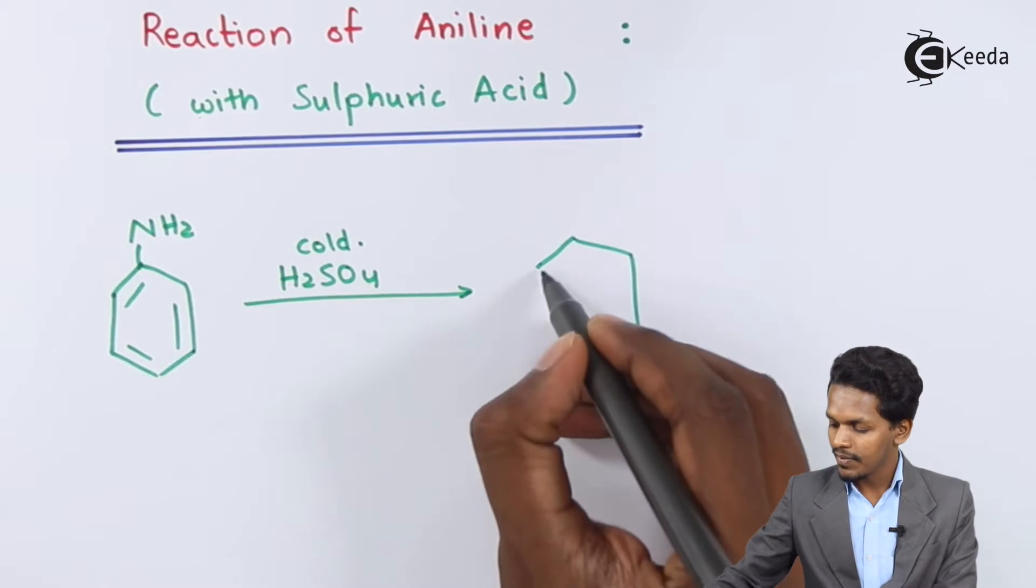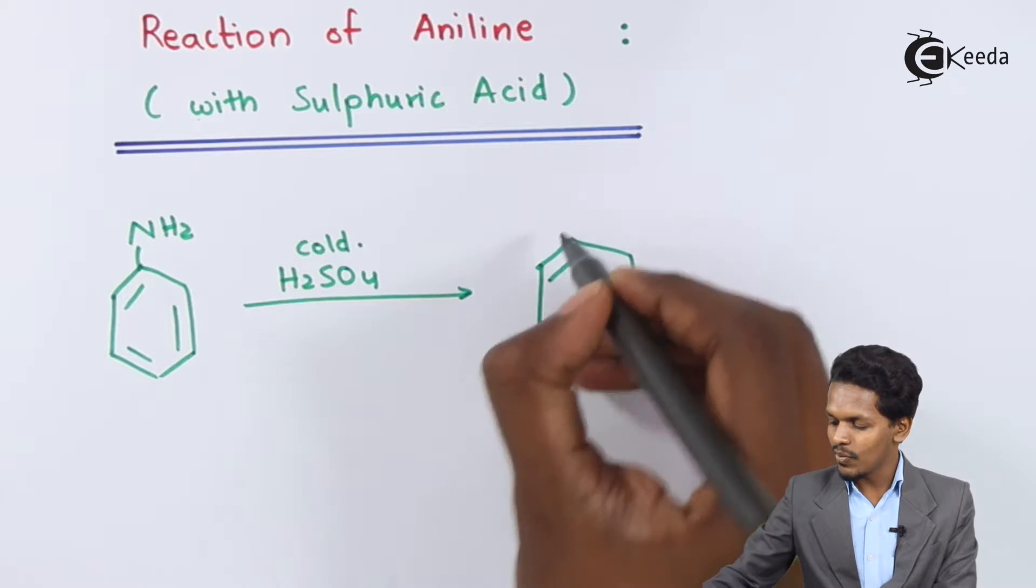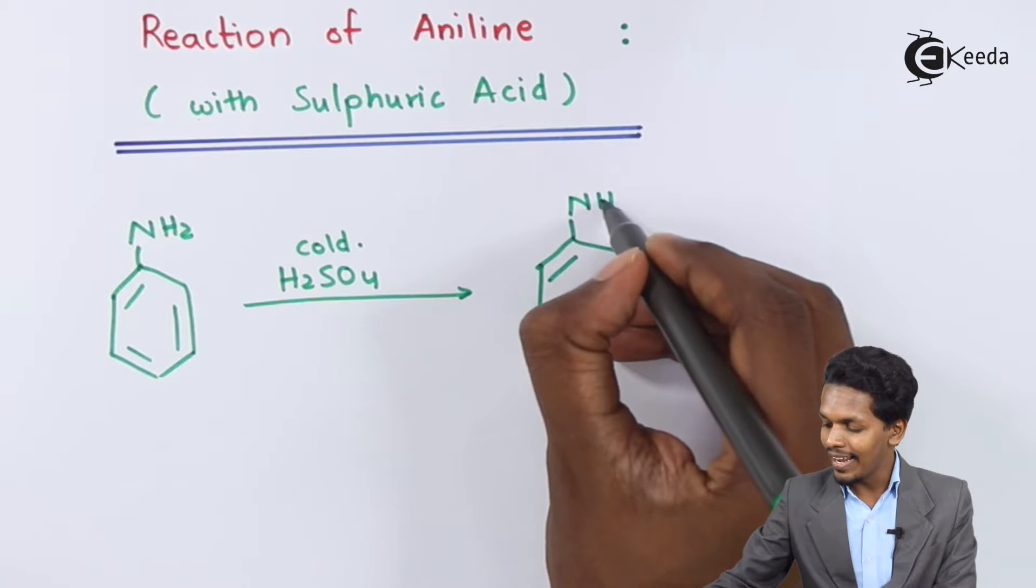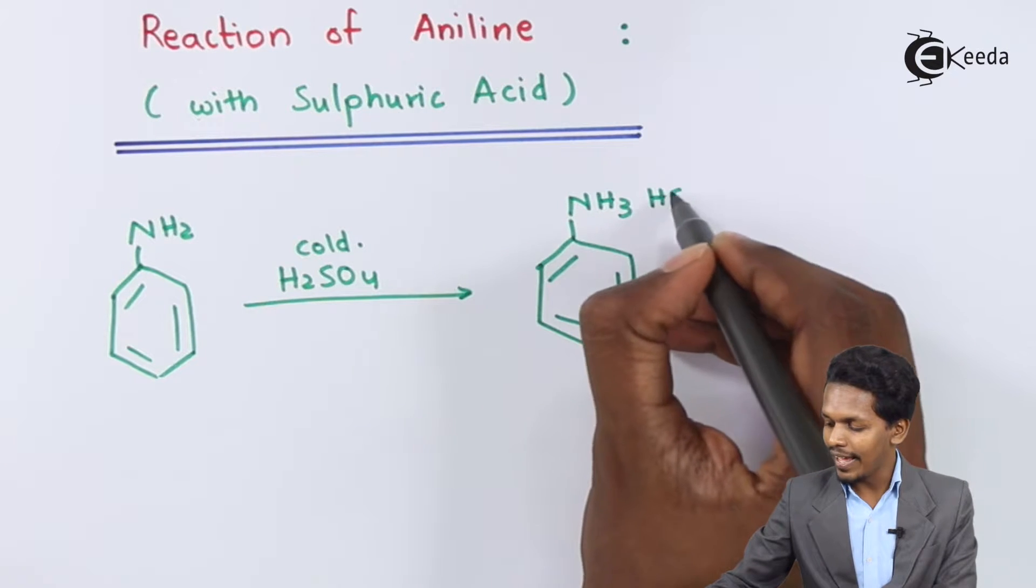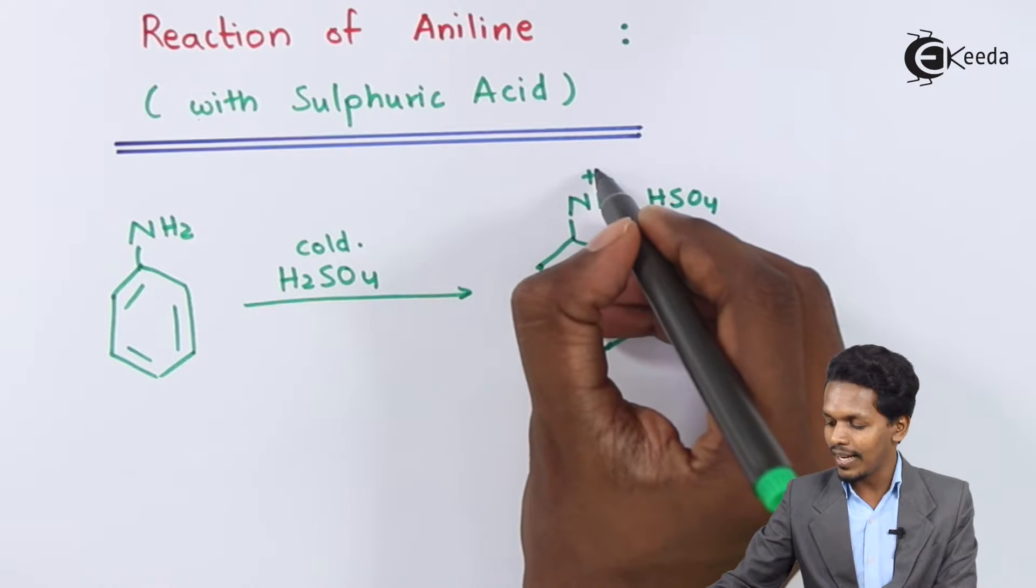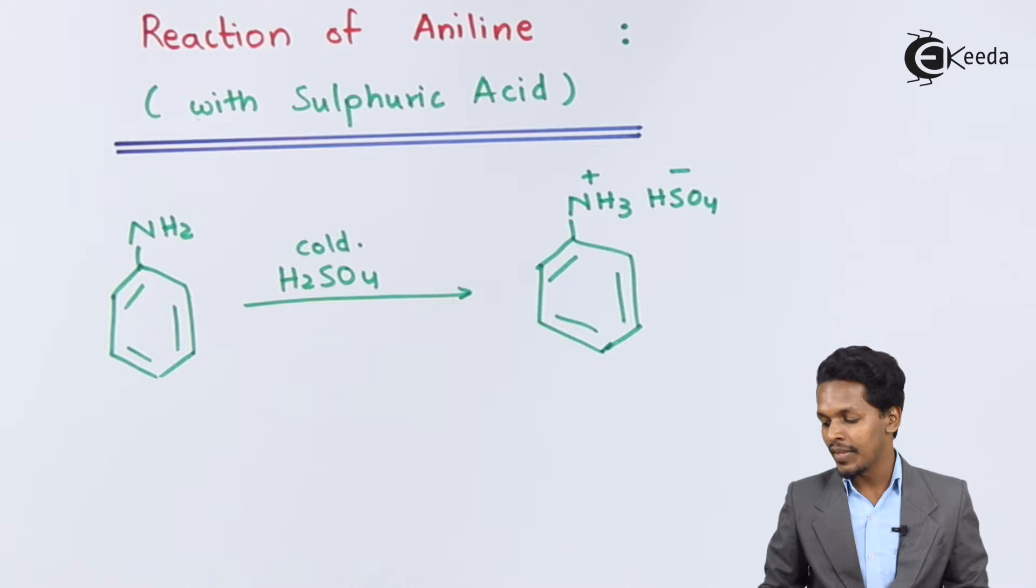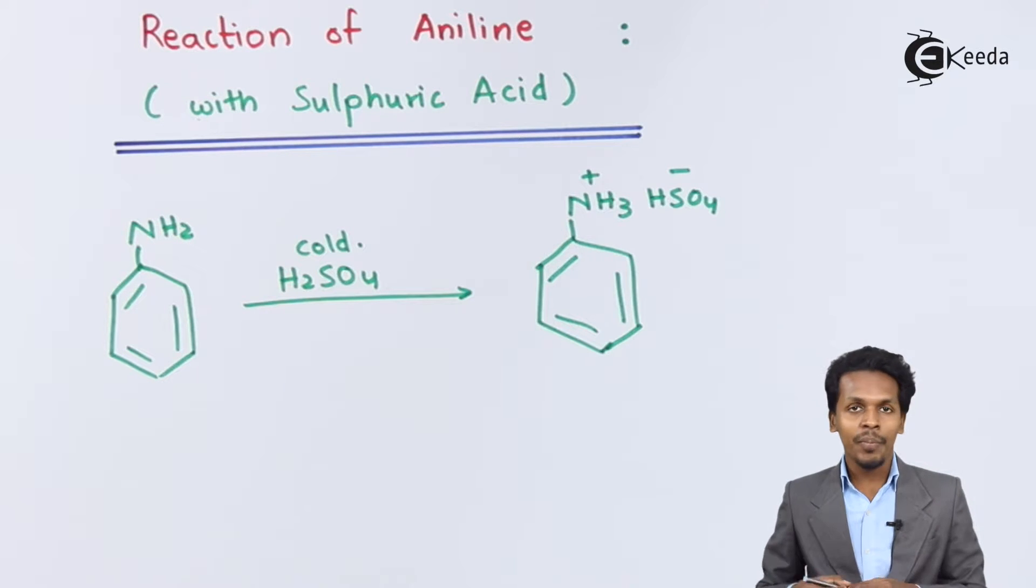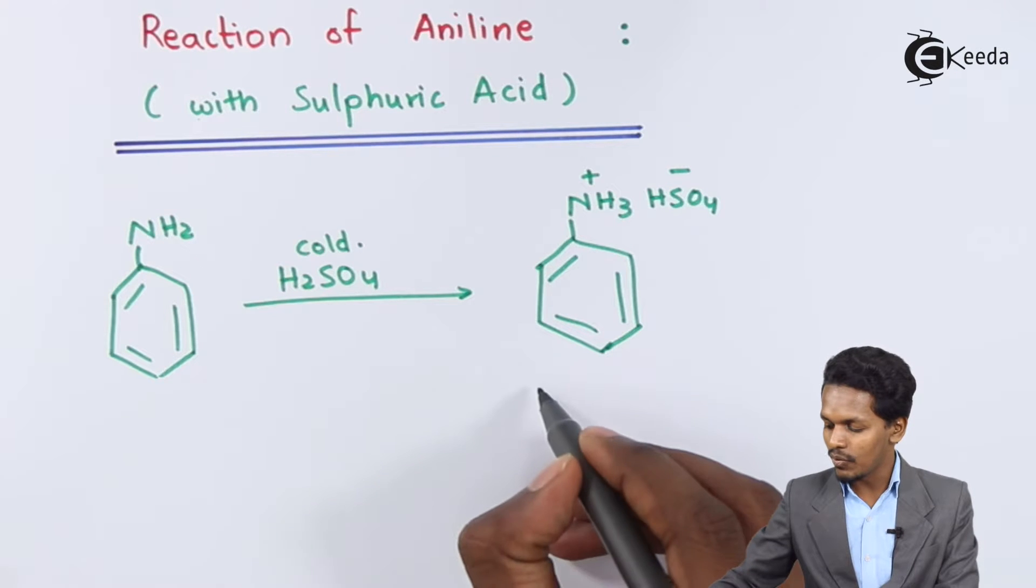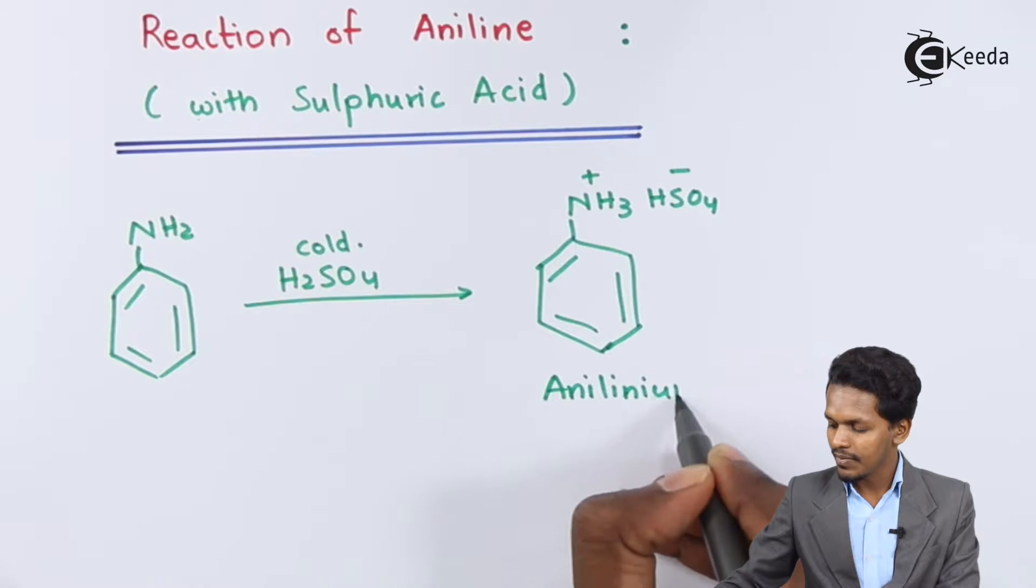In this case the product that we could get is the benzene remains as it is while this NH2 group will be turned into NH3 HSO4 group. This NH3 will acquire a positive charge on the nitrogen atom while this one will acquire a negative charge on it. So this is the formation of an anilineum ion. The name of the product is anilineum hydrogen sulfate.